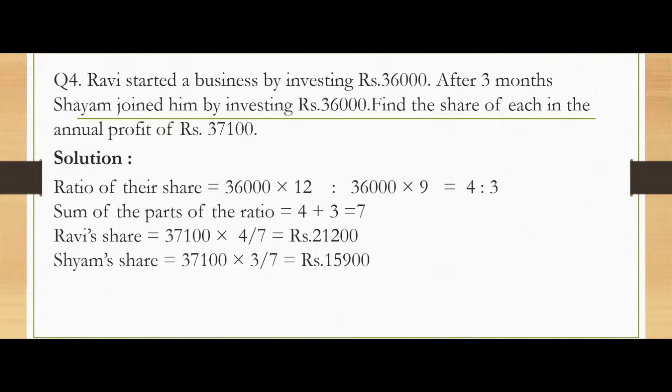This question is saying that Ravi started a business by investing Rs.36,000 for 12 months. After 3 months, Shyam joined him by investing Rs.36,000. So he is investing his money for 9 months only. Find the share of each in the annual profit of Rs.37,100.